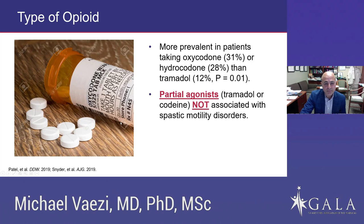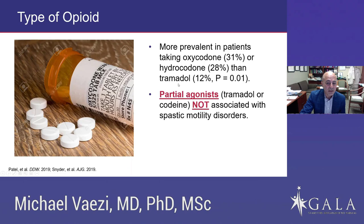Are there specific opioids that may be more causal than others? At least based on published studies, patients on oxycodone and hydrocodone tend to have more issues with motility findings, rather than those on partial agonists such as tramadol or codeine. Patients on tramadol and codeine don't have the same association or impact as those on oxycodone or hydrocodone. This is important because one treatment option may be to switch to partial agonists to reduce the association and help the patient's symptoms.